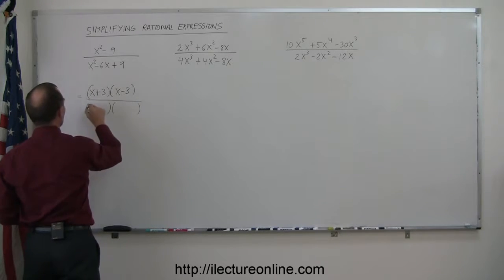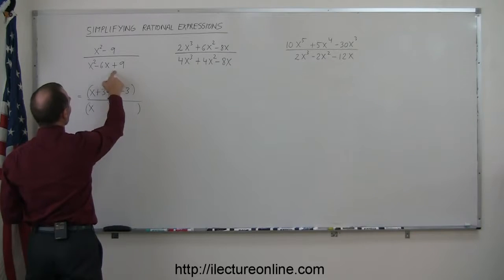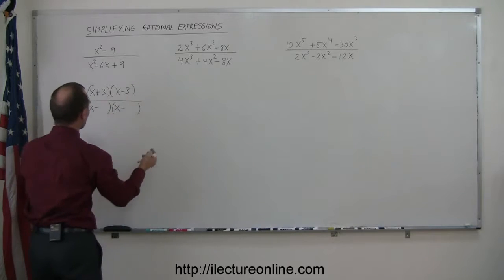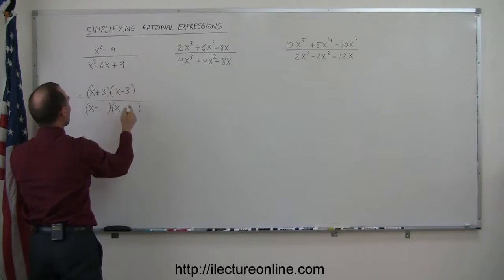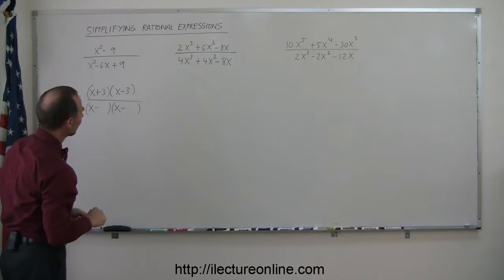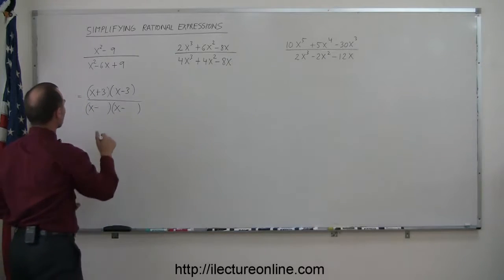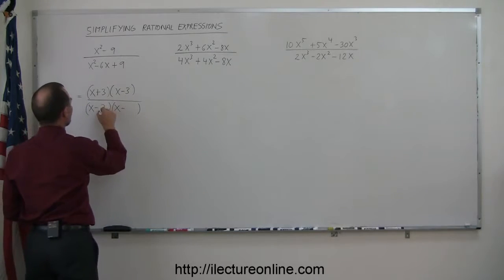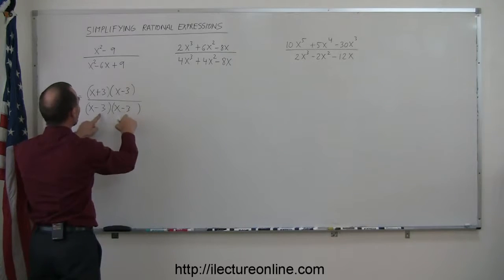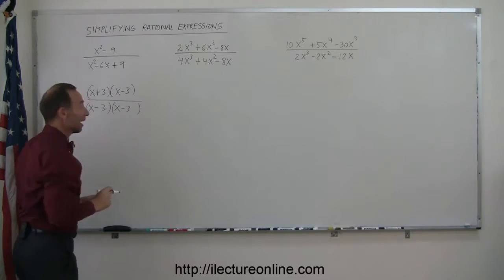I know that to get x squared, I need an x and an x. When I look at the signs, I see a negative and a positive. That means they both must be negative, because when I multiply them together, I get a positive 9. When I add them together, I get a negative 6. A 3 and a 3 will work, because when I multiply I get a positive 9, and when I add them I get a negative 6, so that's correct.